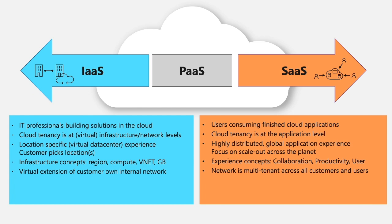Comparing infrastructure as a service to software as a service, there is also a difference in the type of concepts that both clouds embrace. For infrastructure as a service, the concepts are focused on region, compute, and virtual network. In software as a service, experience-type concepts dominate, such as collaboration, productivity, or user. When we translate those different cloud modalities to customer-owned network designs, IaaS is traditionally viewed as a virtual extension of the customer's own network, whereas with SaaS, the network is multi-tenant and shared across many users and many tenants.